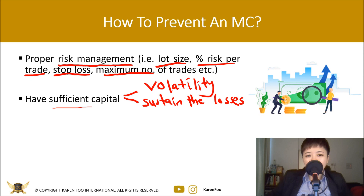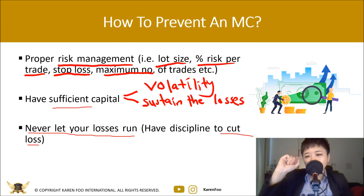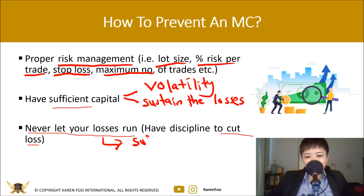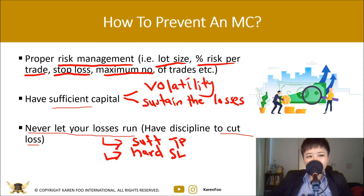Never let your losses run — have the discipline to cut losses. Human nature drives you to take profits early and cut losses late, so you need the discipline to do the opposite: cut losses fast and let profits run. In trading, this means having a soft take-profit target but a hard, fixed stop loss. You can drag your TP up as the price moves in your favor to capture the trend, making sure your TP is always wider than your stop loss.